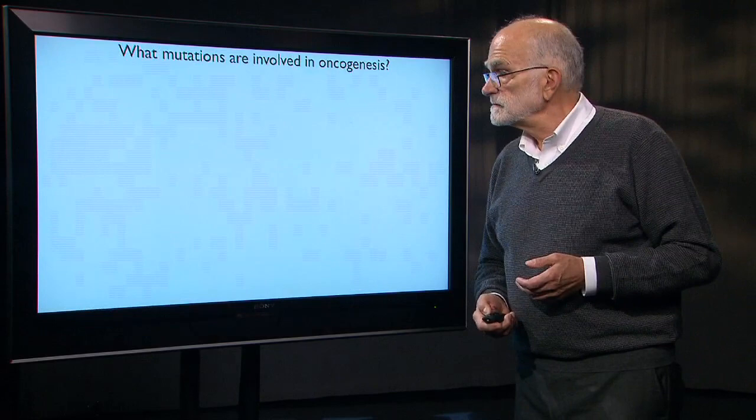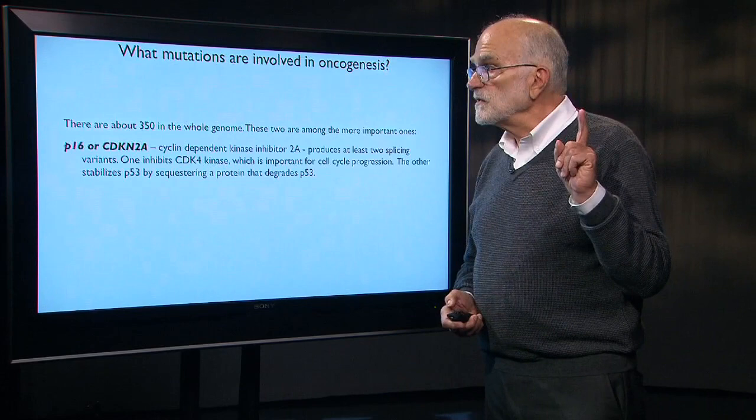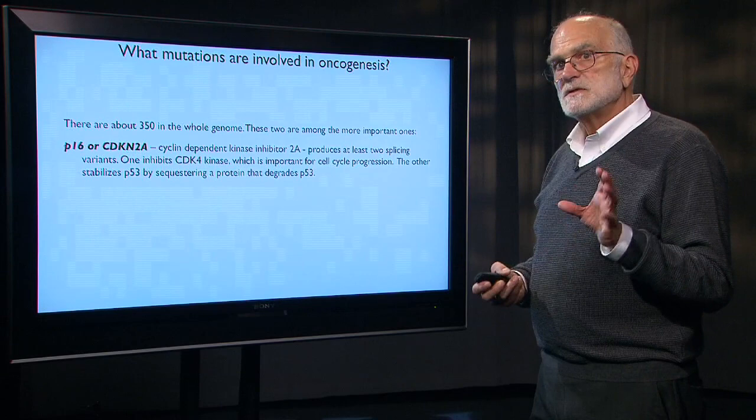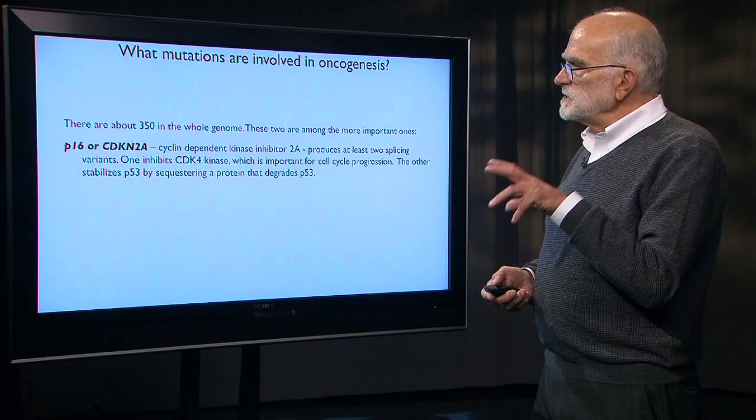If we ask what mutations are really the most important in generating a cancer, there are about 350 in the genome, and two are the most important. One is P16, also called CDKN2A — a cyclin-dependent kinase inhibitor with two splicing variants. One makes a kinase important for cell cycle, and the other stabilizes P53 by sequestering a protein that would otherwise degrade P53.